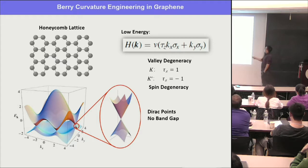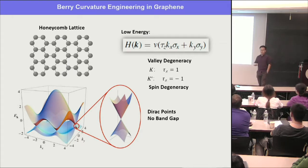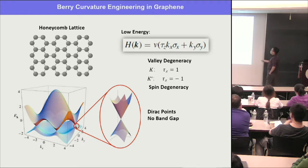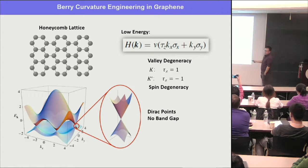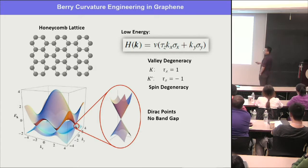The key idea is Berry curvature engineering. The early theoretical proposals are based on graphene, and this is very important because I'm going to talk about how to choose new types of 2D crystals for realizing topological insulators. Graphene is a topological insulator — meaning we just want to look for new graphene in different 2D crystals.